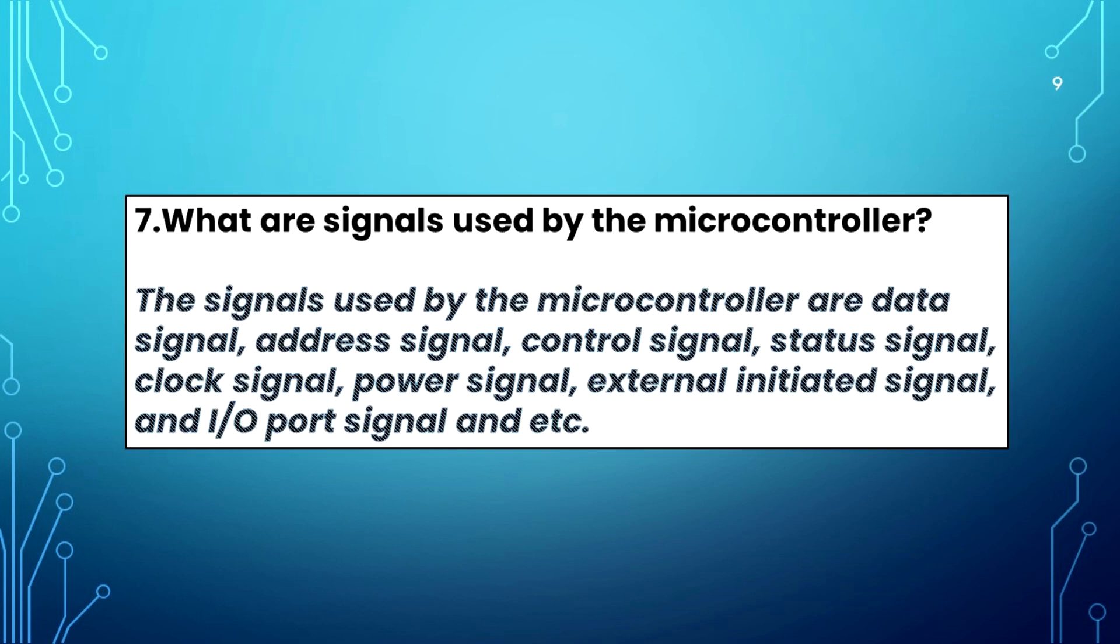What are the signals used by the microcontroller? The signals used by the microcontroller are data signal, address signal, control signal, status signal, clock signal, power signal, external initiator signal, and I/O port signal, etc.